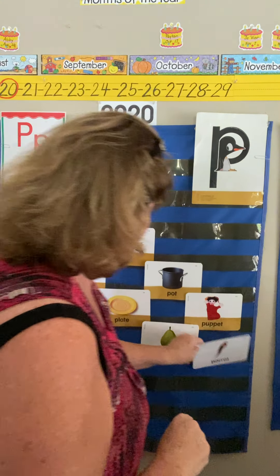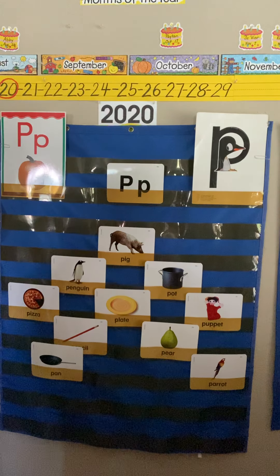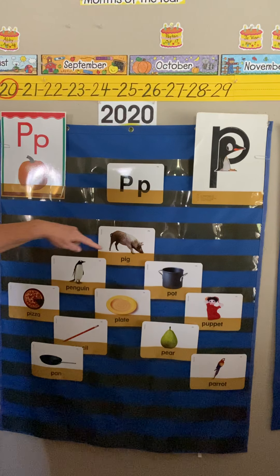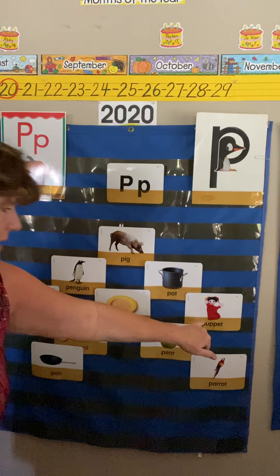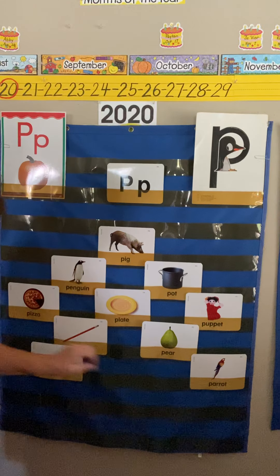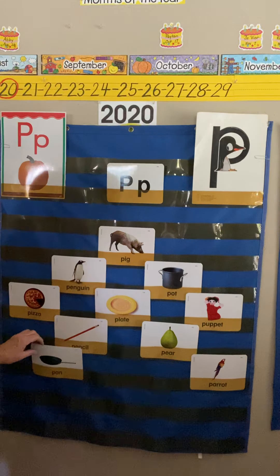The last card is parrot — isn't that cute? A parrot is a bird you can teach to talk — say hello, or 'Polly wants a cracker.' Wow, that was a lot of P words! Let's go over them quick: pig, penguin, pot, pizza, plate, puppet, pencil, pear, pan, and parrot. All of those words have the P sound.